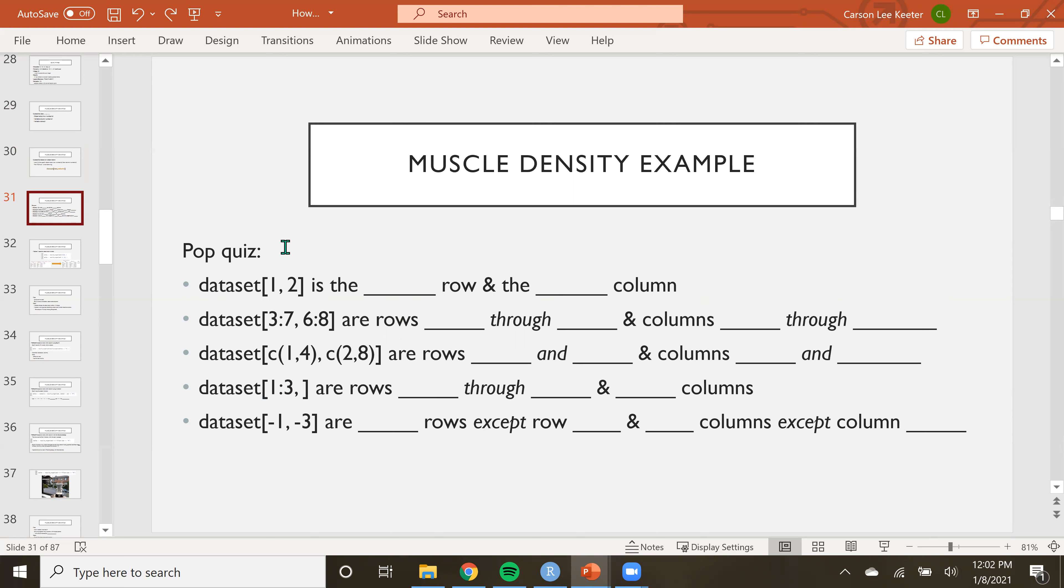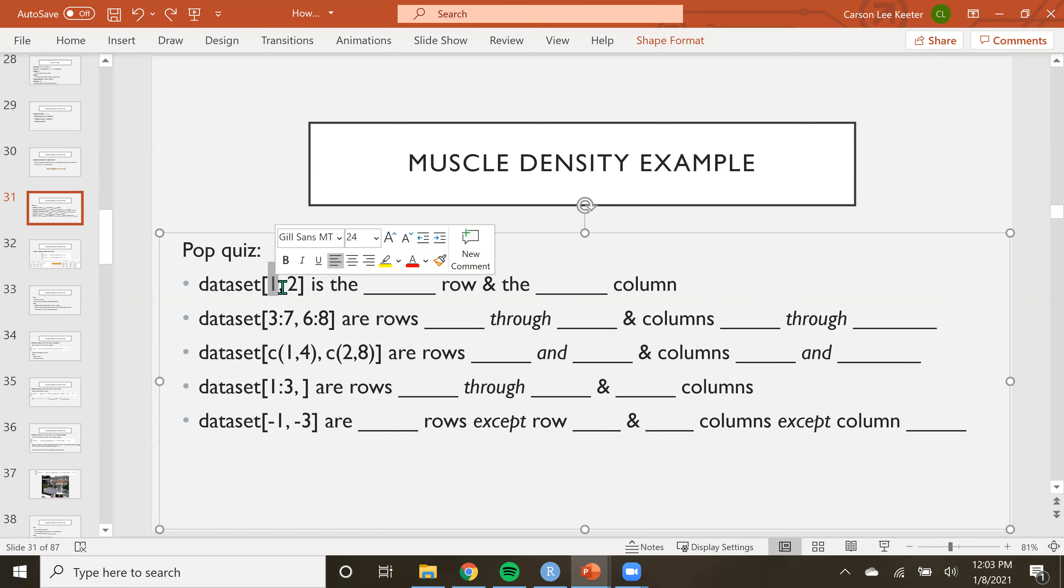Okay. We're back. So I hope you tried it. If you didn't, no worries. So let's get into it. So this first question here, is data set and we care about the thing in the first row in the second column. So that's just going to be one value. The answer here is the first row and the second column.